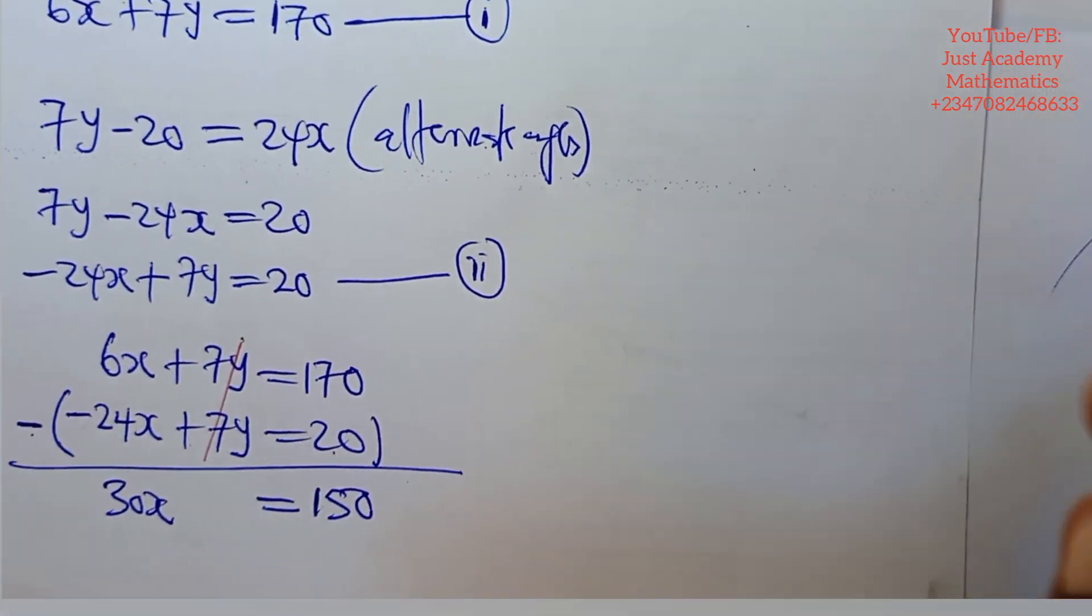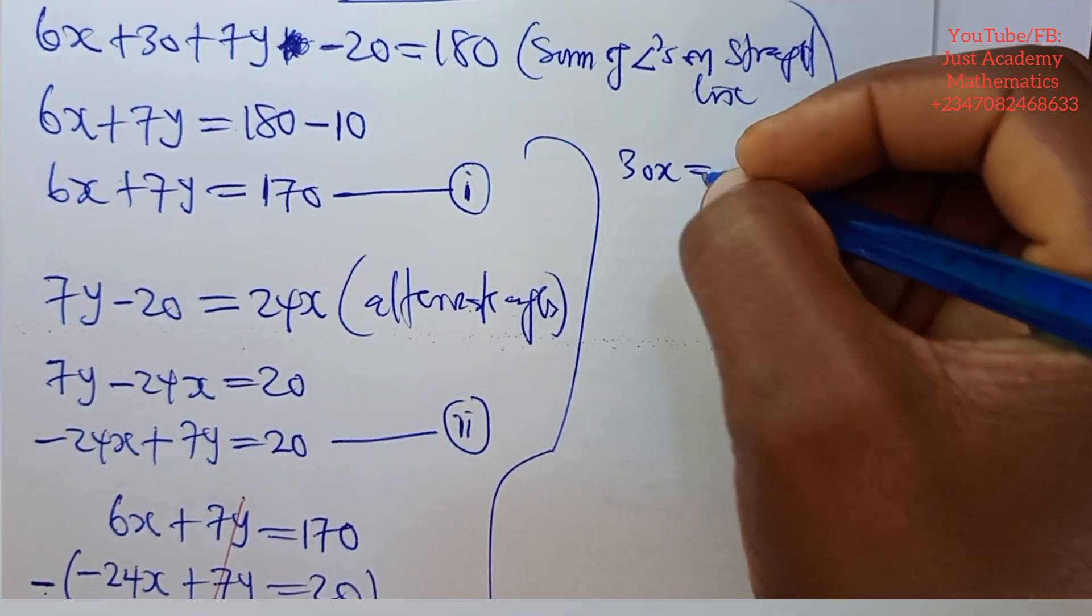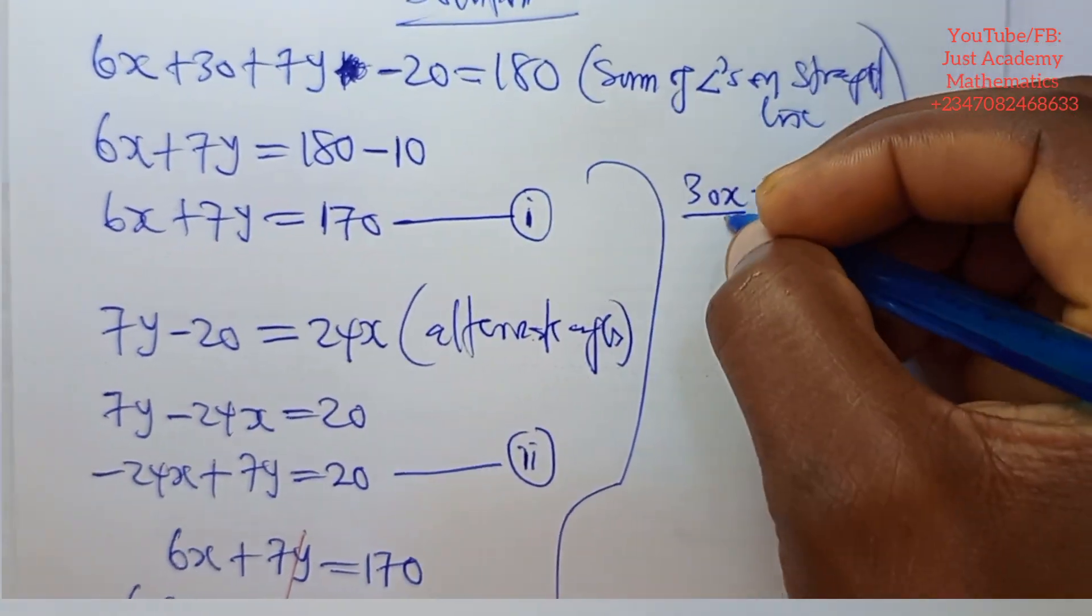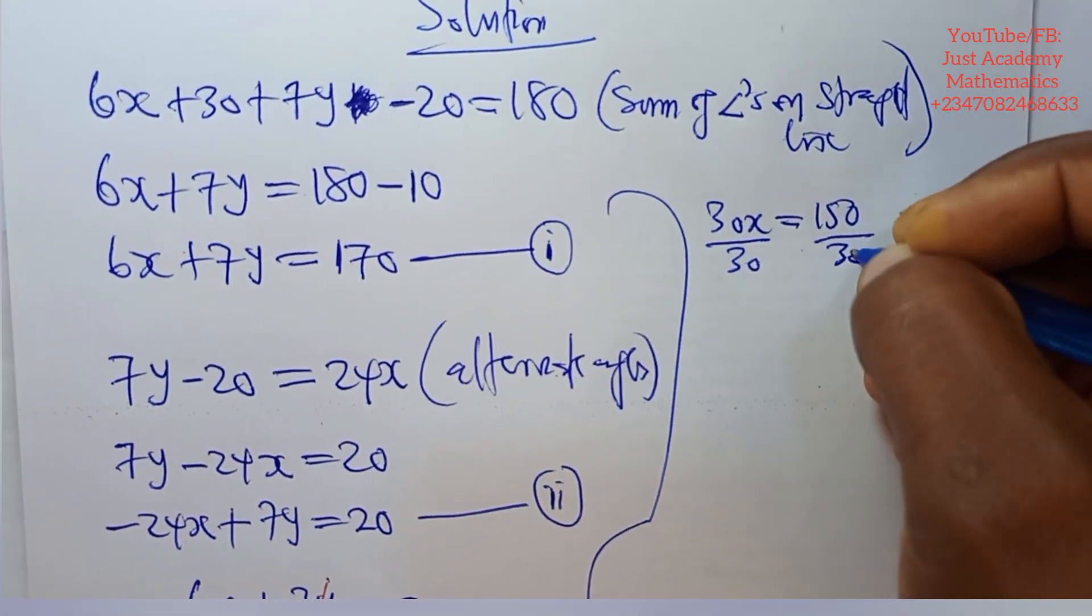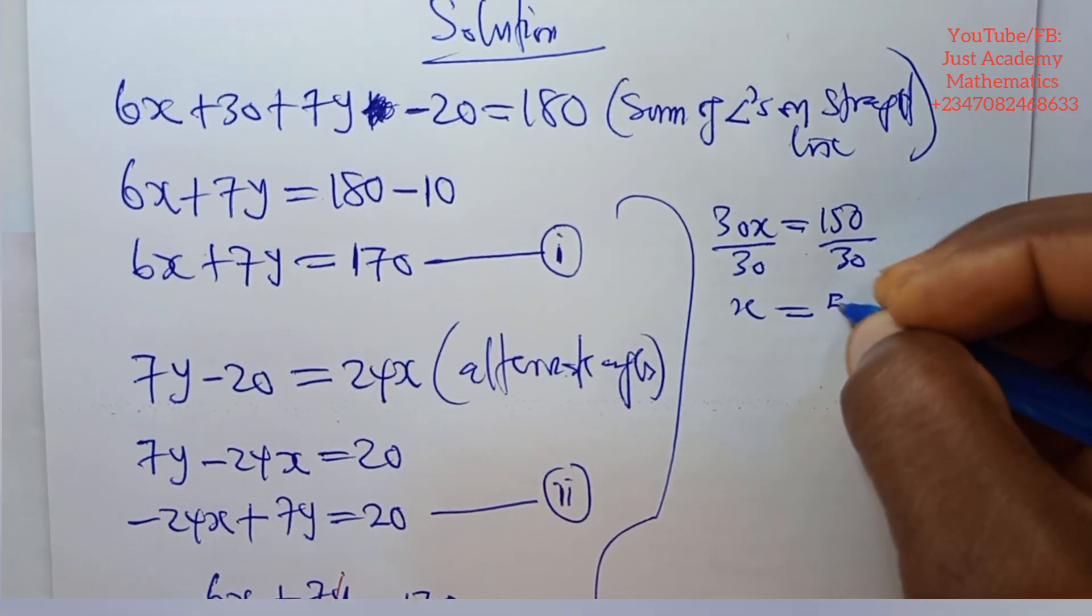So we therefore say that 30x is equals to 150. Divide both sides by 30. So what is x? x is equals to 5.